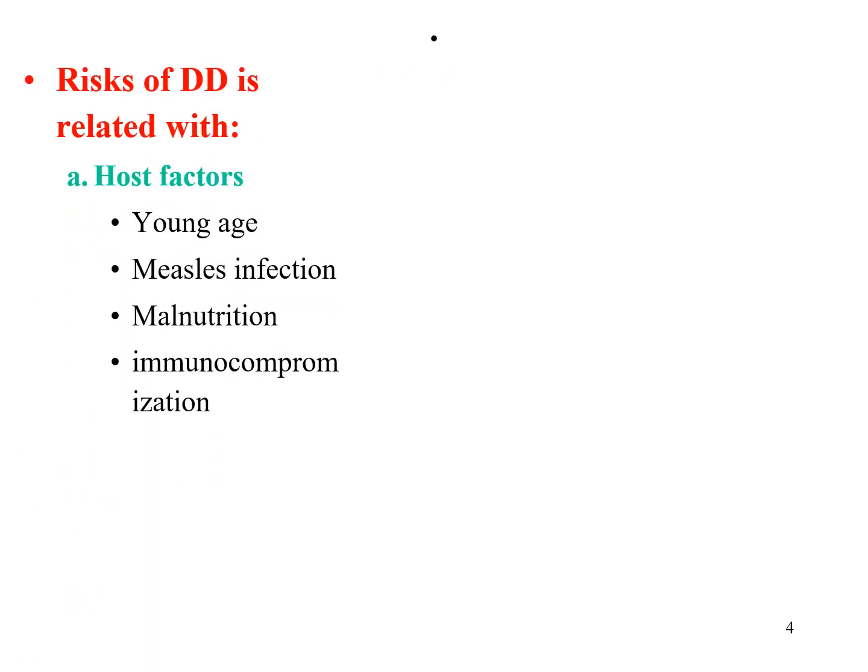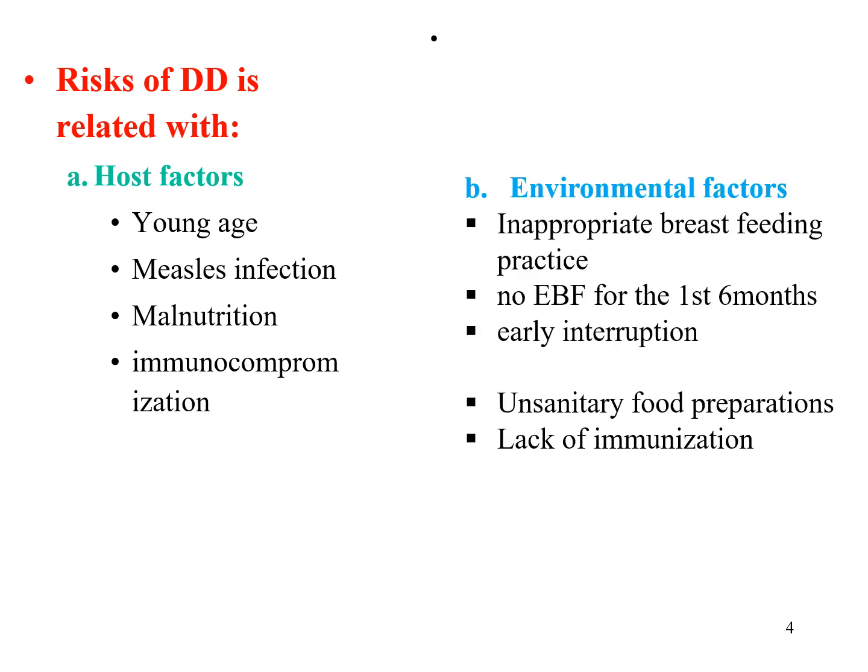Risk factors for diarrhea are classified as host factors and environmental factors. Host factors include young age, measles infection, malnutrition, immunocompromised states such as diabetes and HIV infection, inappropriate breastfeeding practices, lack of exclusive breastfeeding for the first 6 months, early discontinuation of breastfeeding before 2 years, unsanitary food preparation, and lack of immunization.